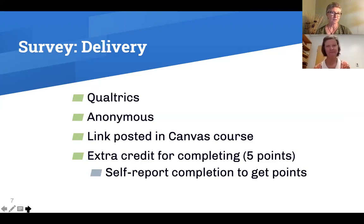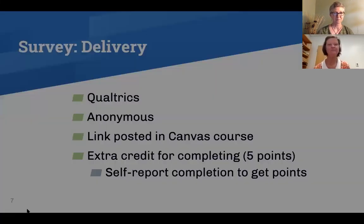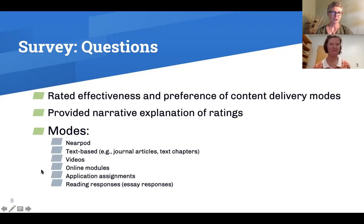We did offer five points of extra credit. The students love extra credit — it's usually the students who don't actually need it who love it most. Since it was anonymous, they received the five points by just posting in Canvas that they had submitted the survey. So Barb's going to tell you a little bit about what was actually on the survey.